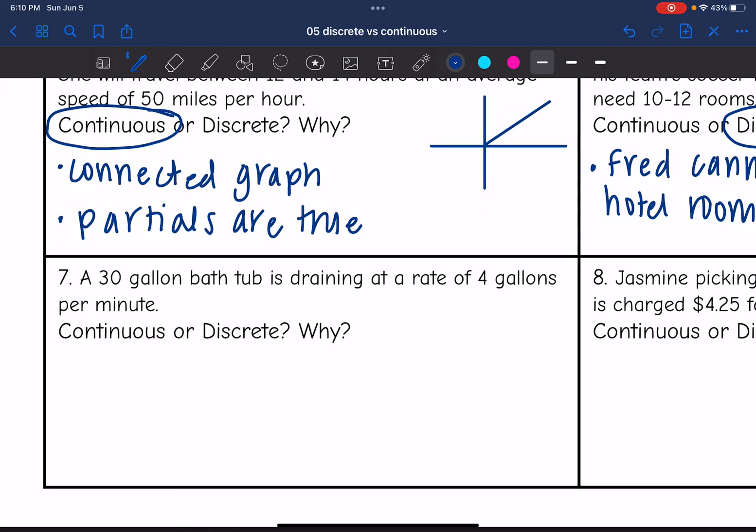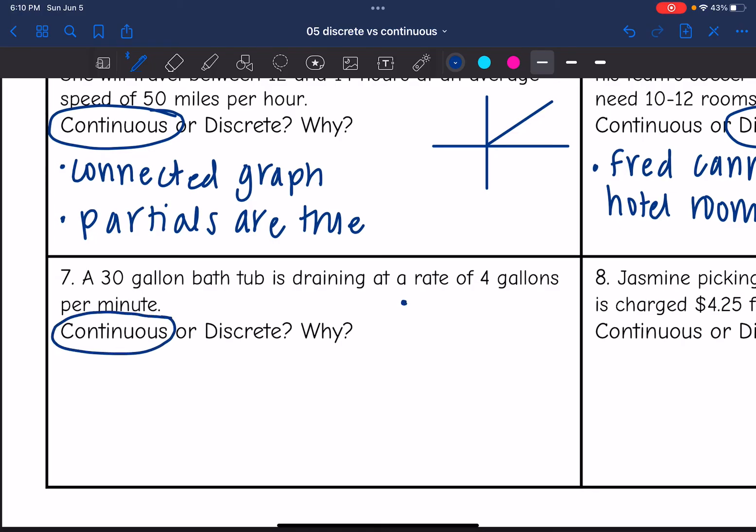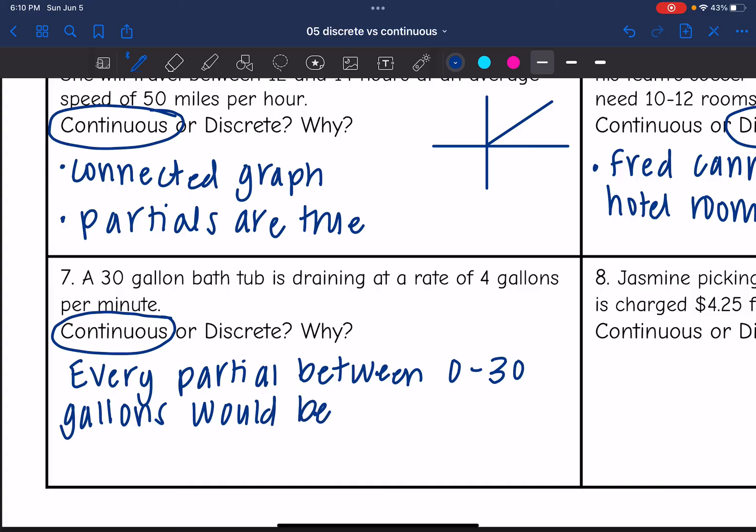Okay, number seven says a 30-gallon bathtub is draining at a rate of four gallons per minute, continuous or discrete, and why? So this would definitely be continuous because that's going to have a start and then it's going to keep happening until it has a finish. That's going to be connected. You're not going to start with 30 gallons and then all of a sudden end up at zero gallons. There's something happening in between those the entire time. So this is continuous because every partial between 0 to 30 gallons would be valid. It's going to be that connected graph.